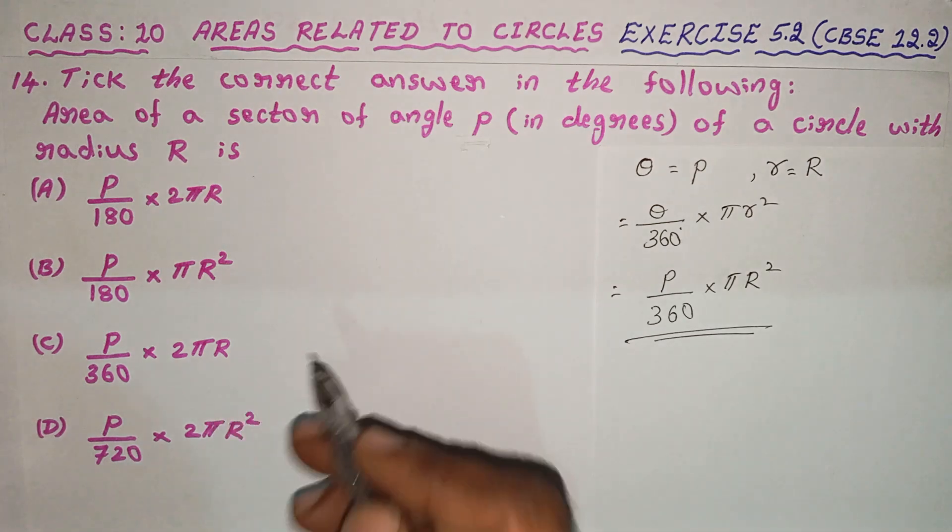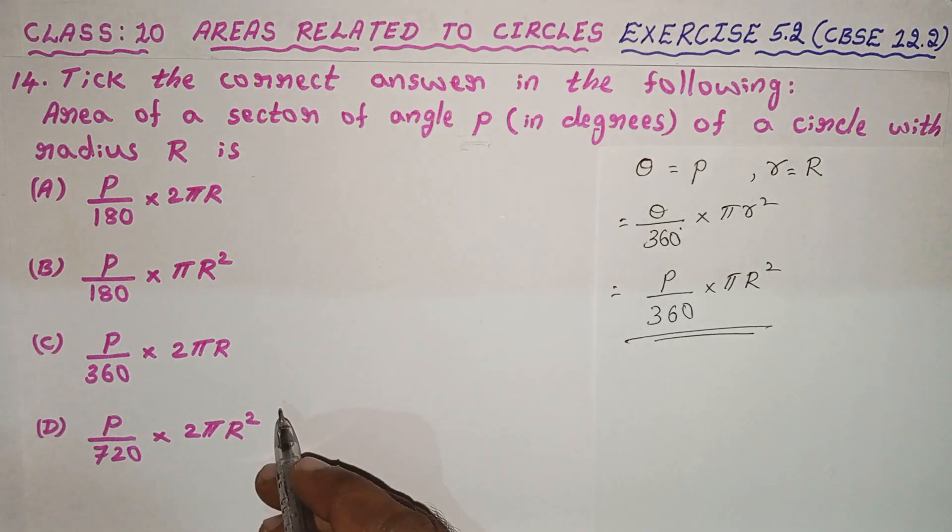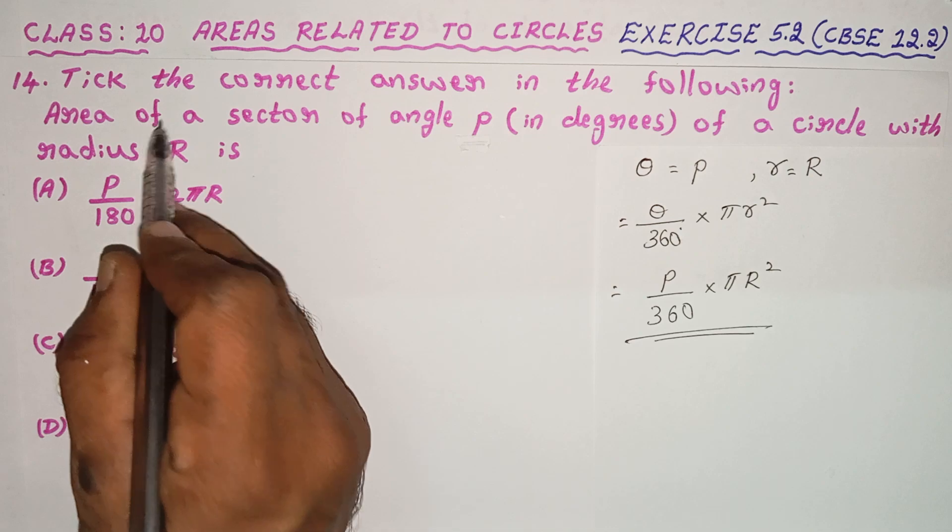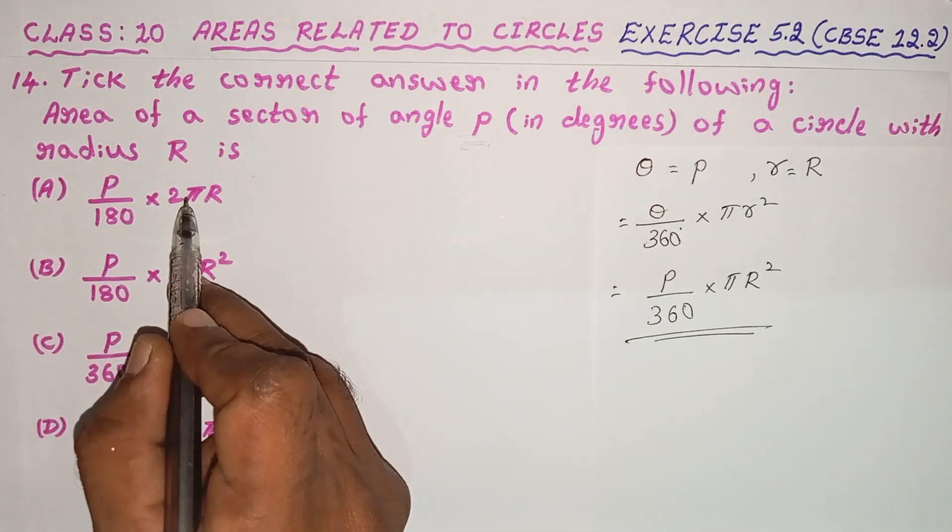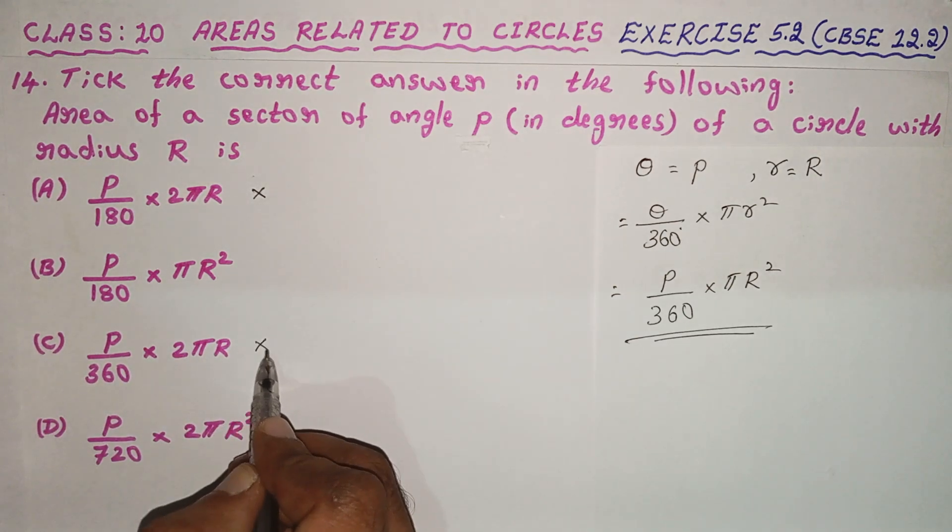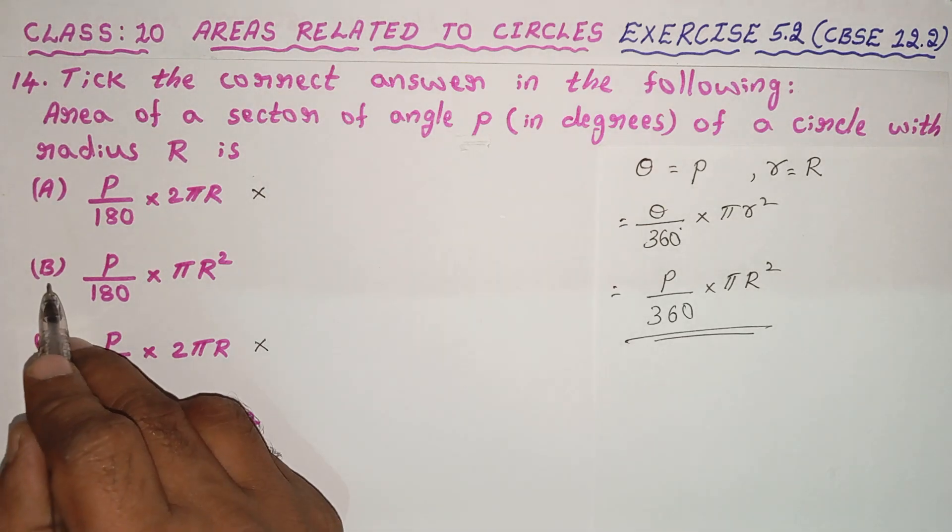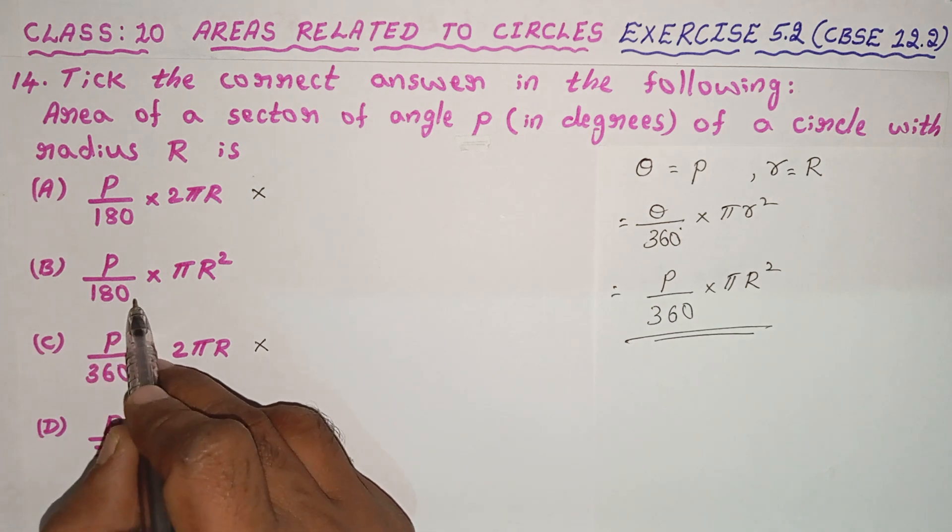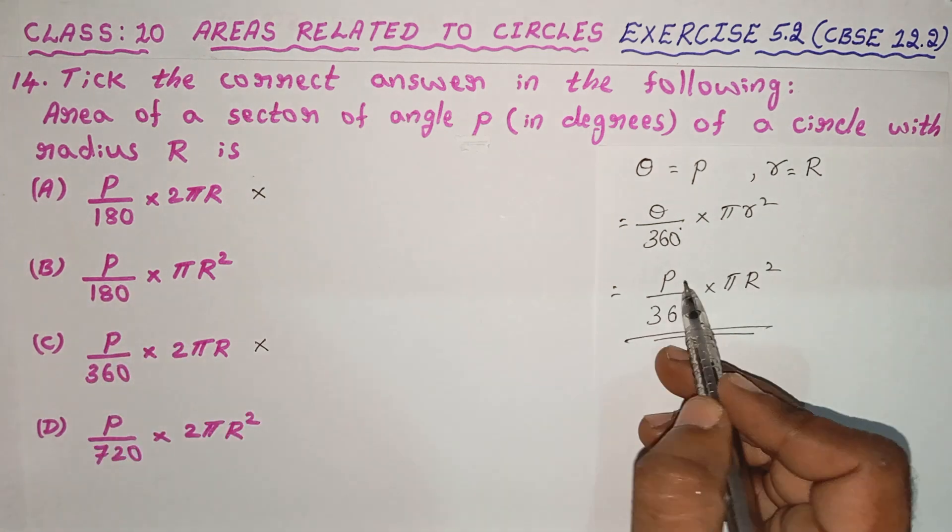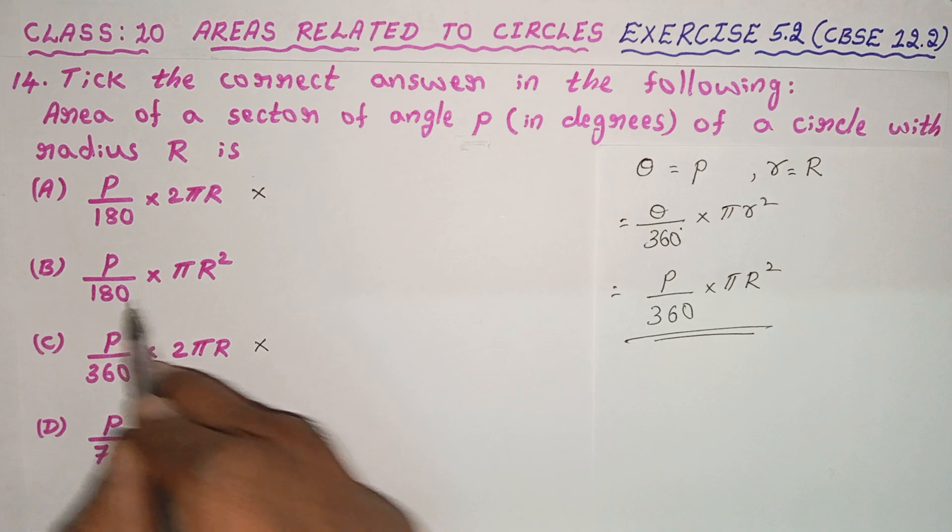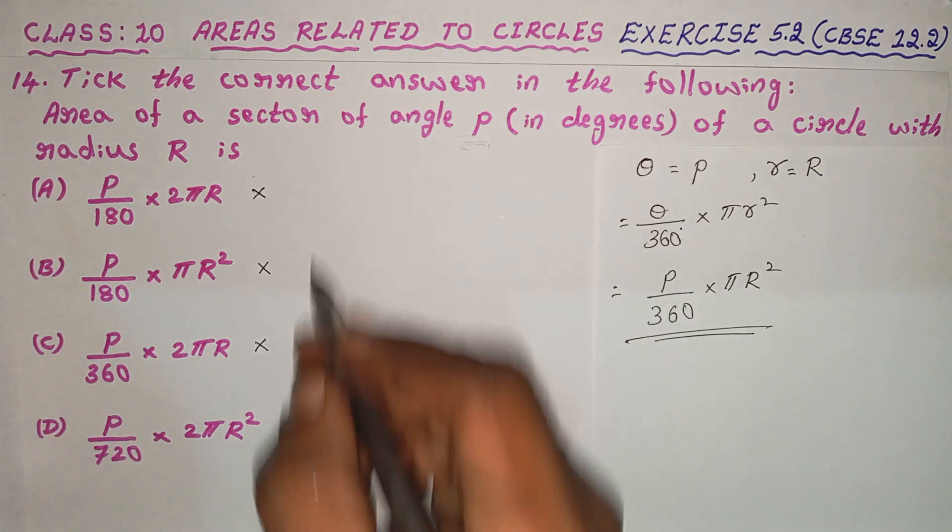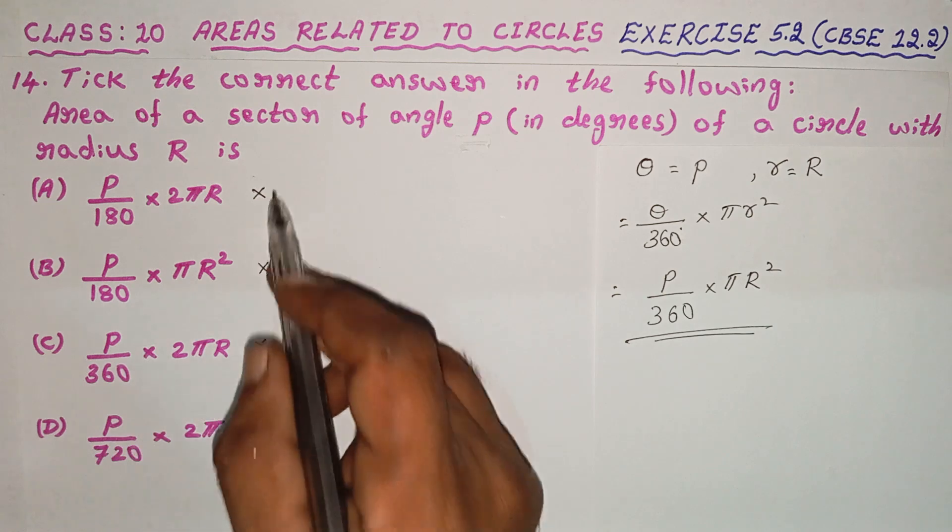Now we need to identify the correct answer from the options. Checking the first option with 2πR, the second option, and option B.